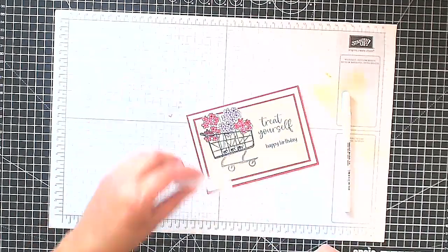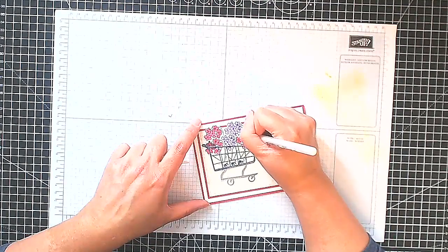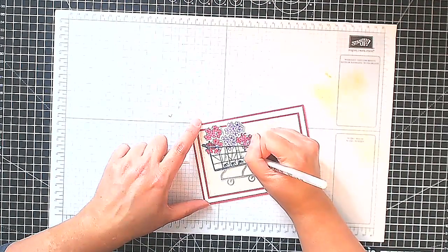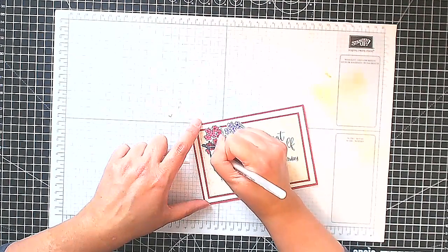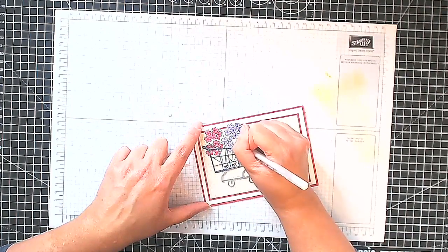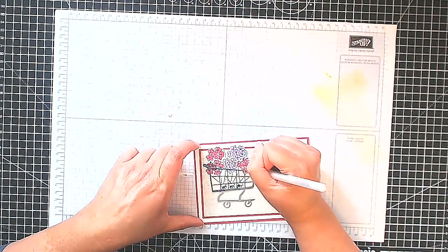Now I'm just going to use my white gel pen and I'm just using it here to add some highlights to my flowers, just to give some, just to help lift the color. I feel sometimes a little bit of a white pen really does help to lift and make the whole project pop.